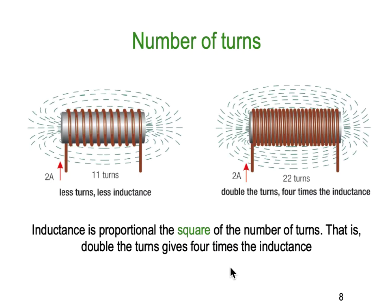Looking at the number of turns: in the first example, two amps through an inductor with 11 turns and an iron core produces a certain amount of magnetic flux — about four lines of flux. Moving to the right with 22 turns, you double the turns and get four times the inductance — about eight lines of flux. So inductance is proportional to the square of the number of turns: double the turns gives four times the inductance.